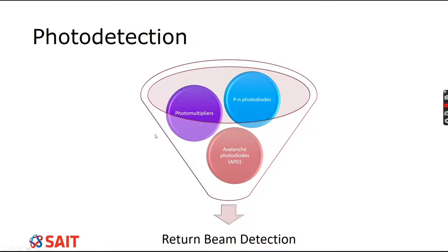Photo detection uses different components such as PN photo diodes, photo multipliers, and avalanche photo diodes. You don't need to know the electrical engineering behind them — just know that photo detection has ways of detecting the laser beam when it returns and recording it. Magic essentially happens here, and we'll let the electronic engineers deal with that.